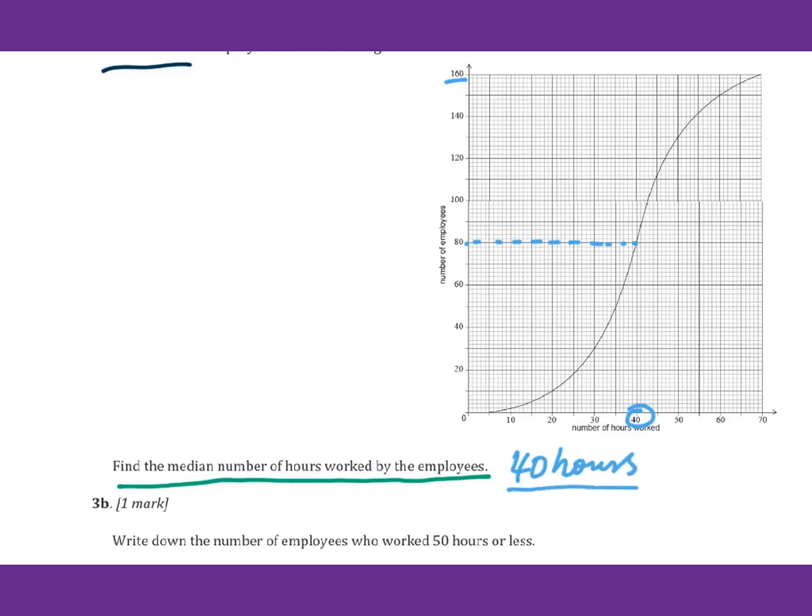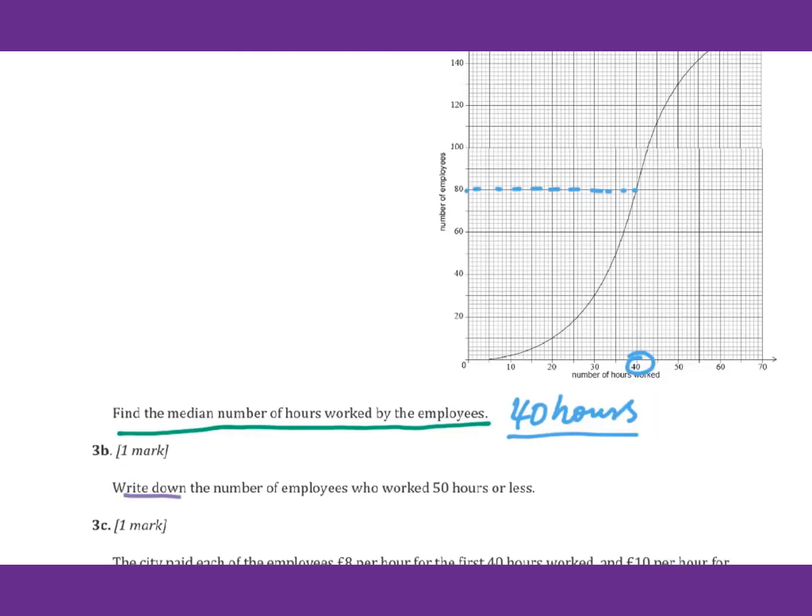This will be the median number. For 3b, write down the number of employees who worked 50 hours or less. You will get this 50, go up, it's here. Then go to the horizontal line here. You will get 130. Less than 50 hours, that means all together we have 130 employees.